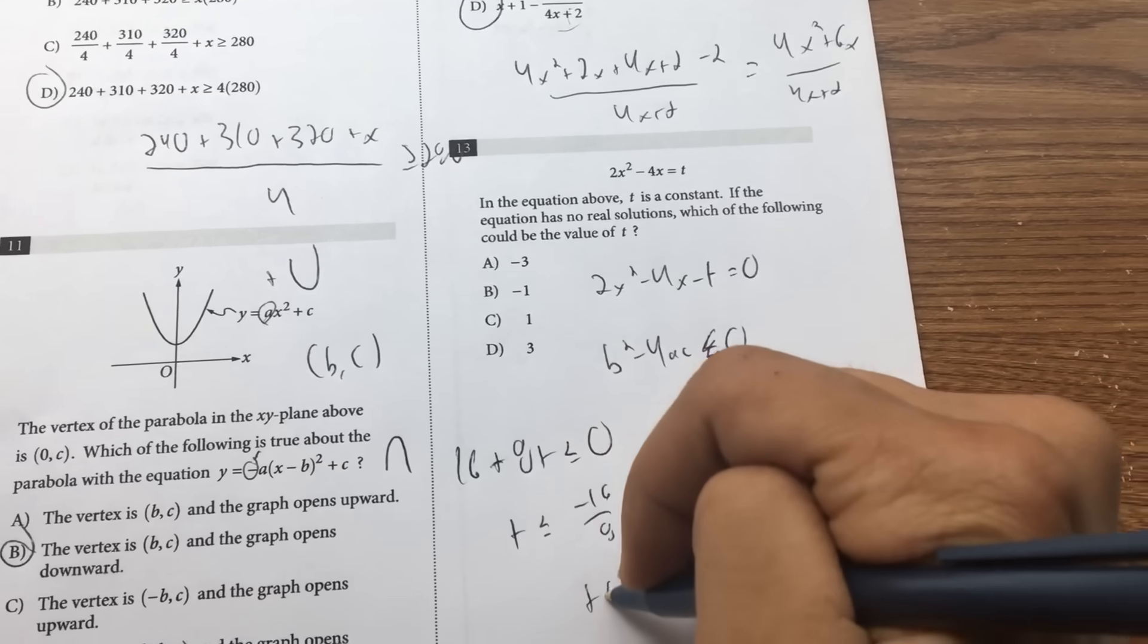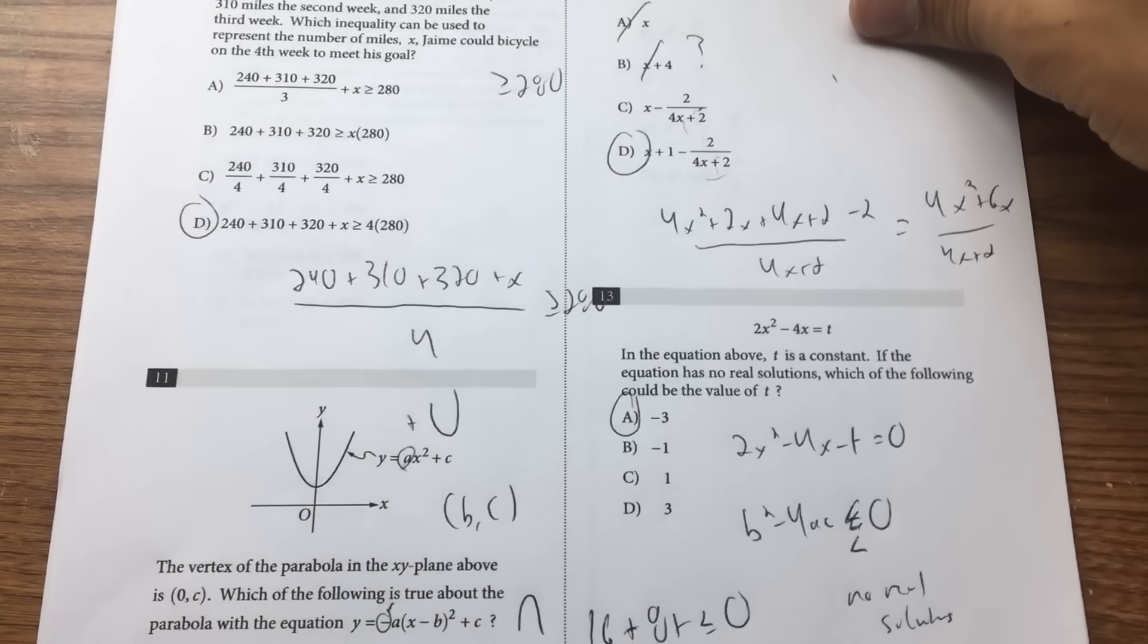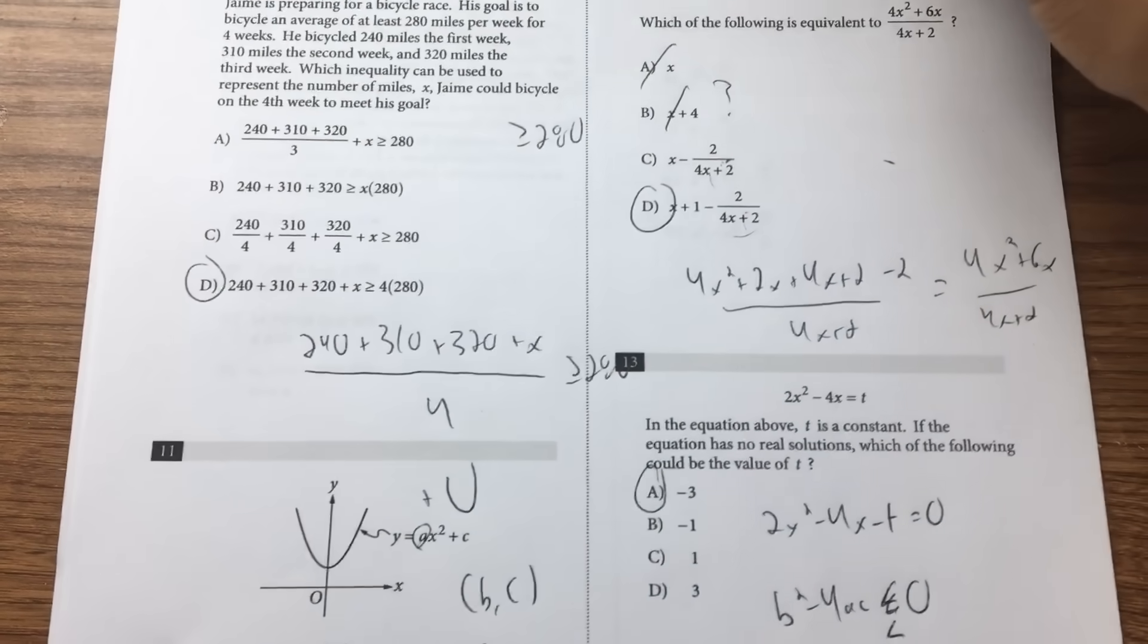t is less than or equal to negative 16 over 8. t is less than or equal to negative 2. Negative 3 since that's the only option that's less than or equal to negative 2.